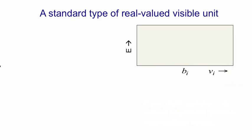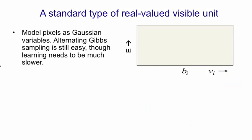The obvious thing to use is a linear unit with Gaussian noise. So we model pixels as Gaussian variables. We can still use alternating Gibbs sampling to run the Markov chain required for contrastive divergence learning. But we need to use a much smaller learning rate, otherwise it will tend to blow up.